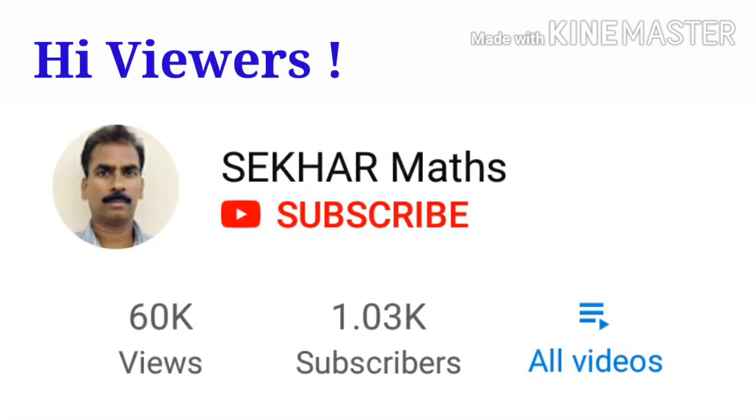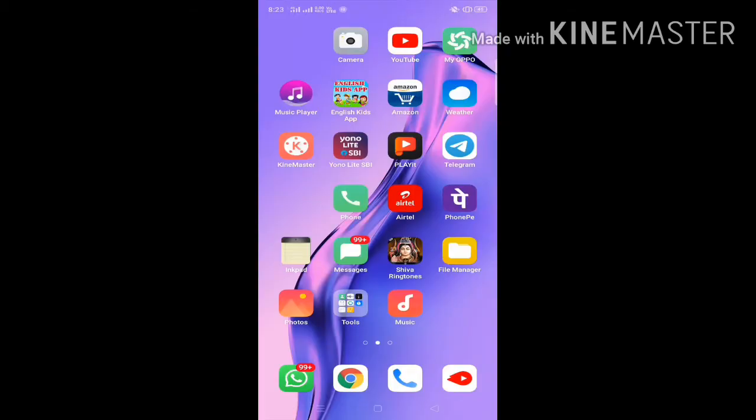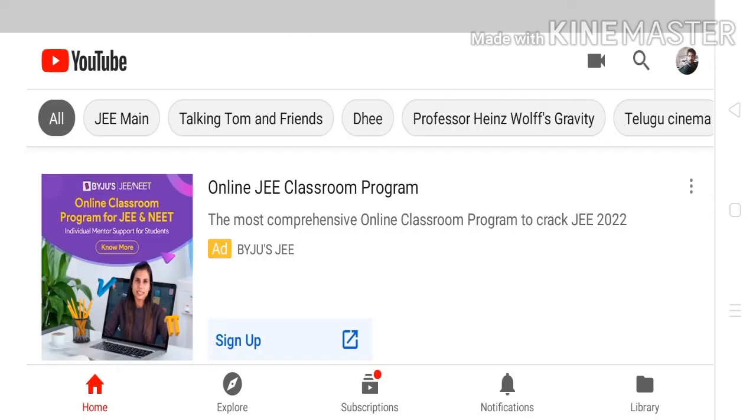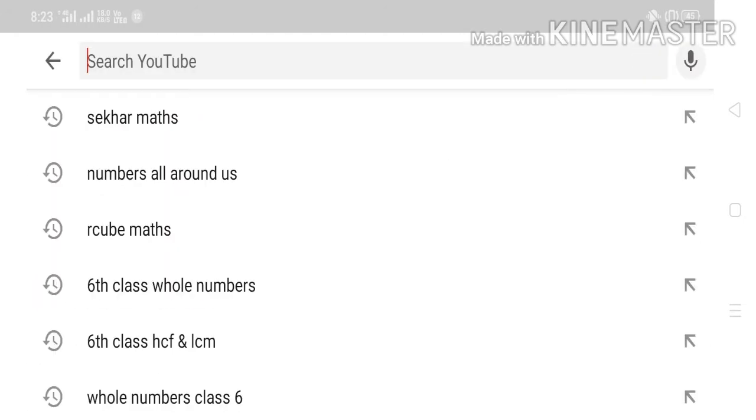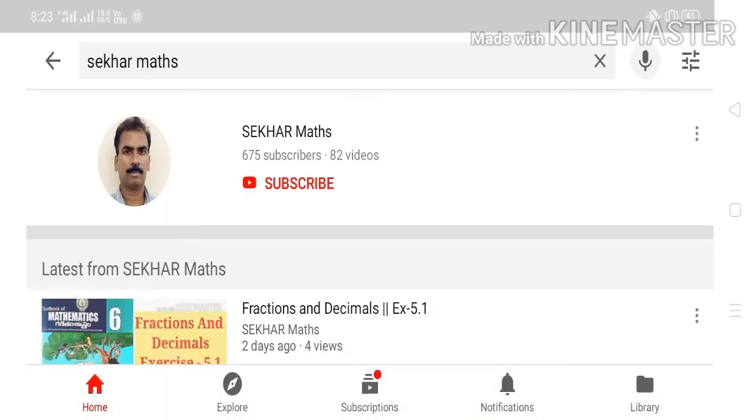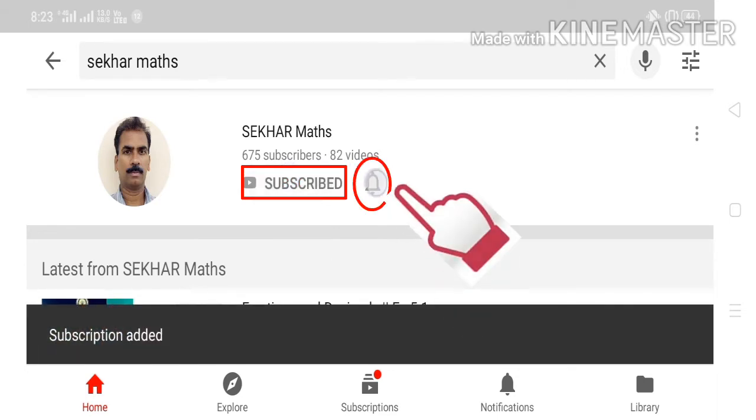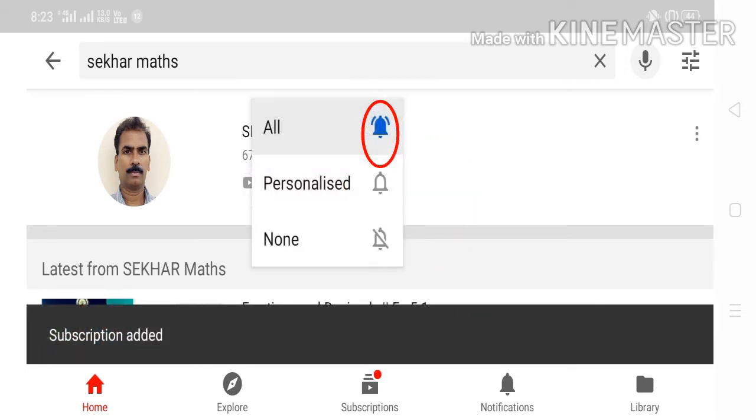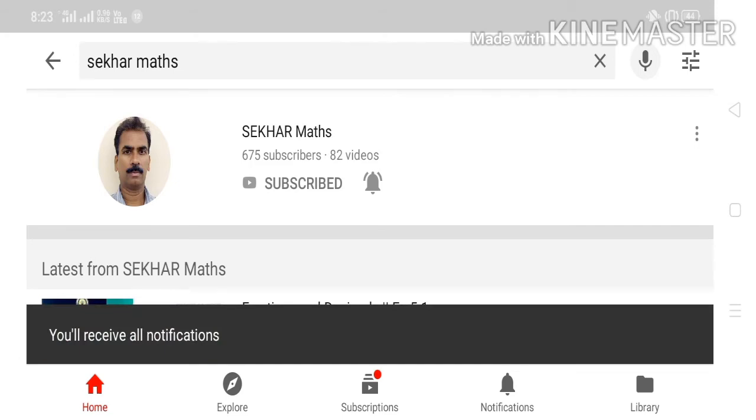Hi viewers, if you don't want to miss any videos uploaded by me, please follow these steps. In your cell phone, open YouTube and in the search box type Shaker Maths. You will see my photograph in a circle and also a subscribe button. Touch the subscribe button and also touch the bell icon and select all. You will get instant notifications whenever I upload any video.